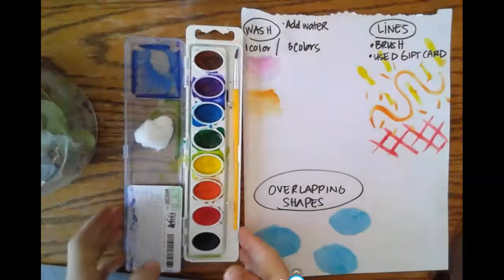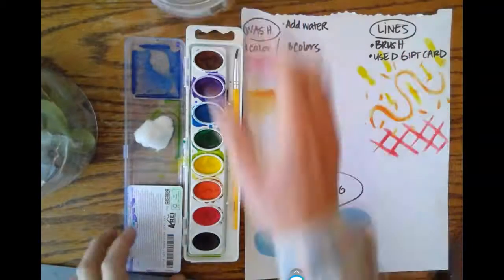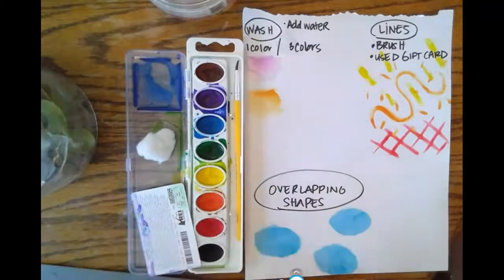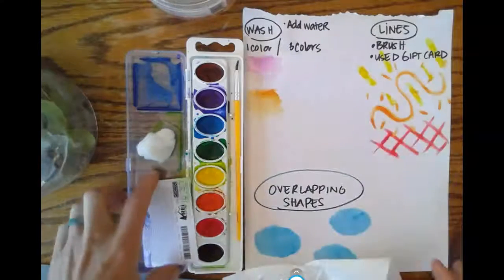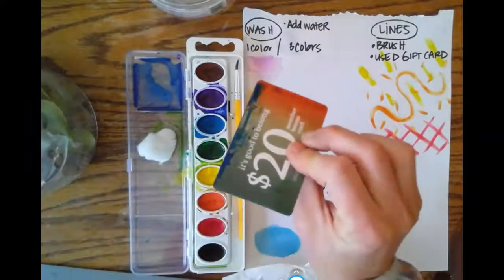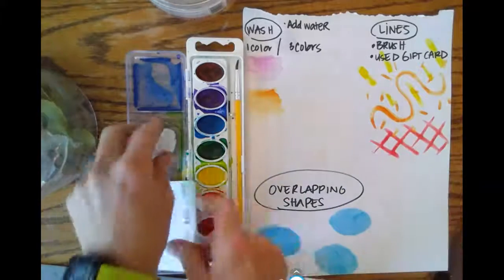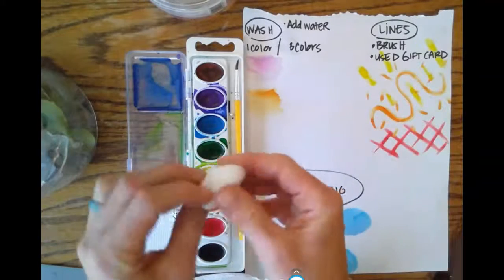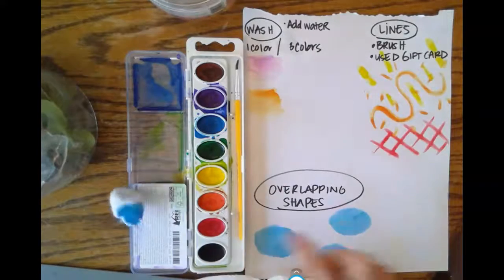In addition to your paint set, you'll need a water cup and a brush. I have a paper towel to dab my brush on and clean it. I found an old gift card that I'm going to use to create some line designs, and I also have this cotton ball. I'll show you how I use that to create my circle shapes today.